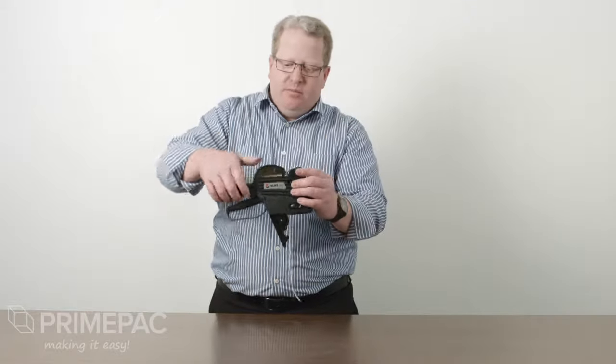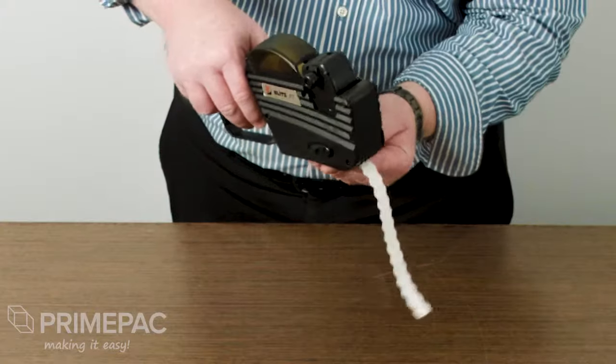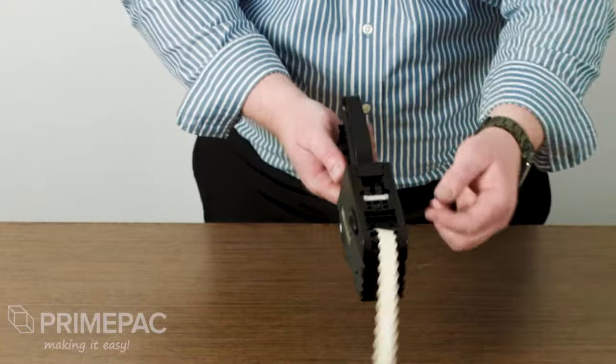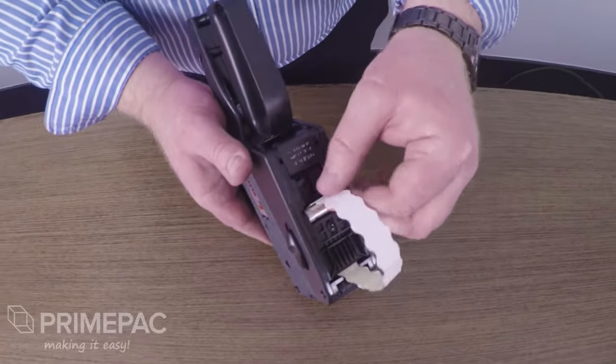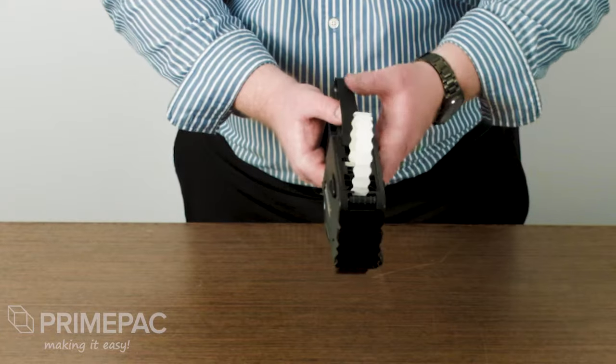Close the top cover. Close the bottom cover. Take the labels and feed them down the back of the steel roller and then just start pulling the trigger.